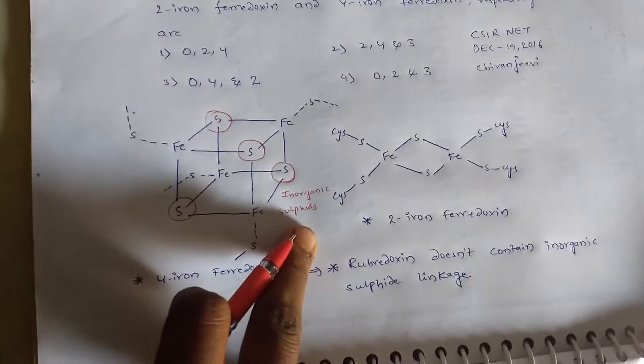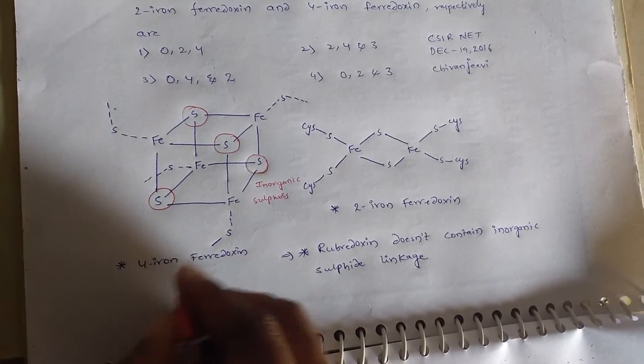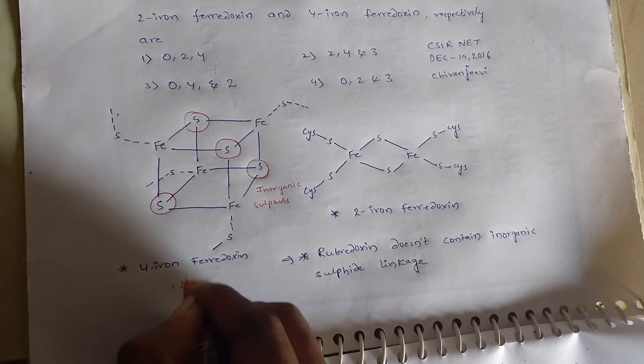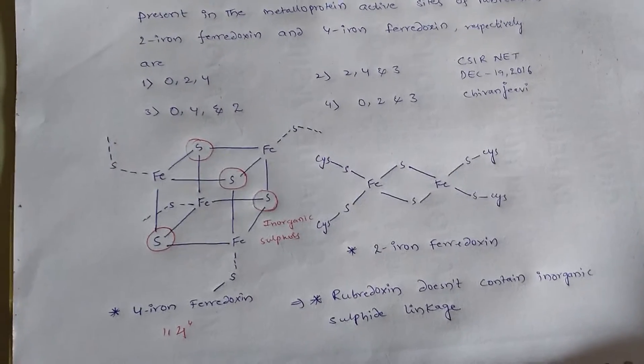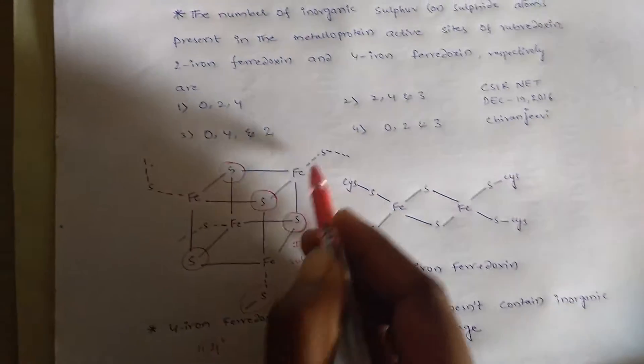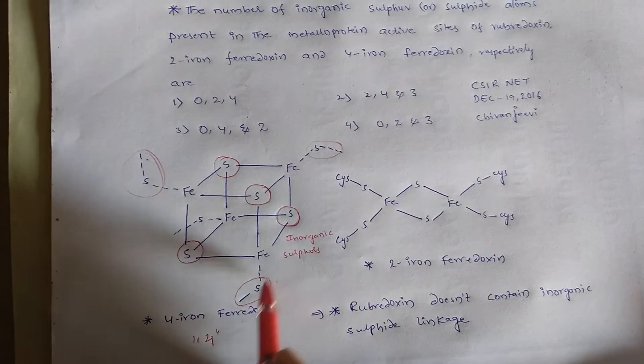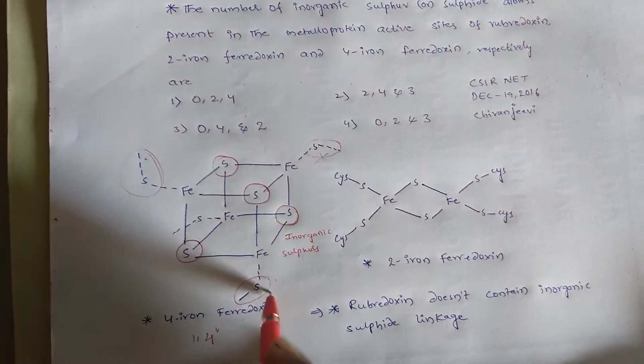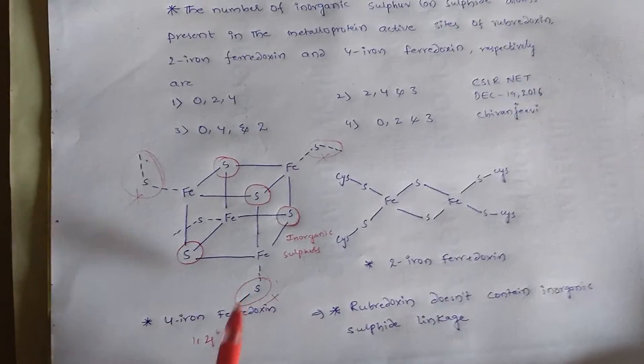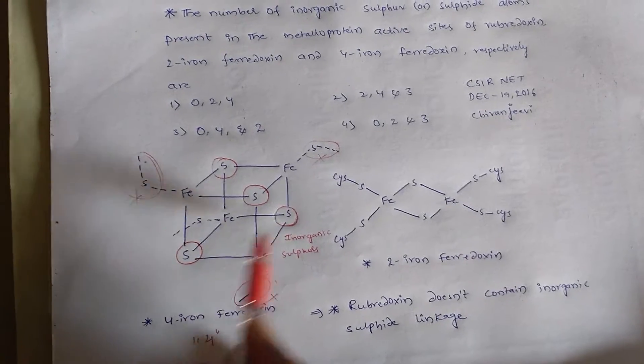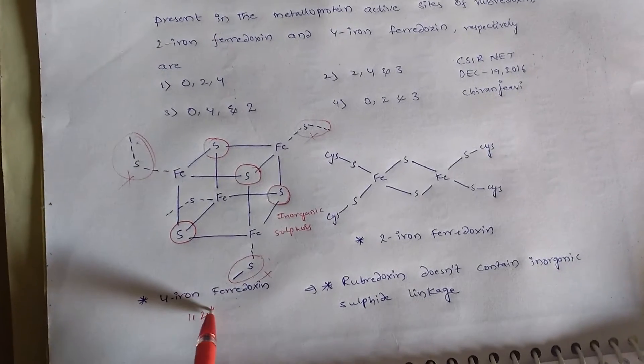So 4-iron has 4 inorganic sulfurs, and these sulfurs are cysteine-linked sulfurs, so these are organic. That's why these are not considered as inorganic sulfurs. The inorganic sulfur or sulfide bonds are 4 in 4-iron ferredoxin.